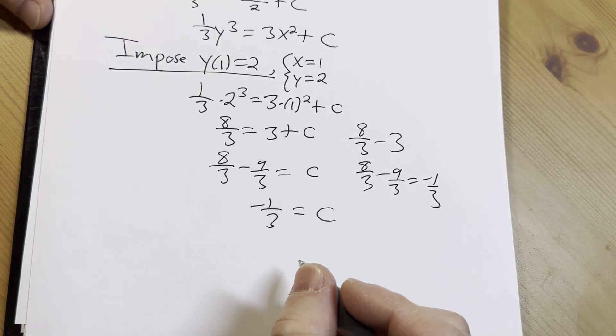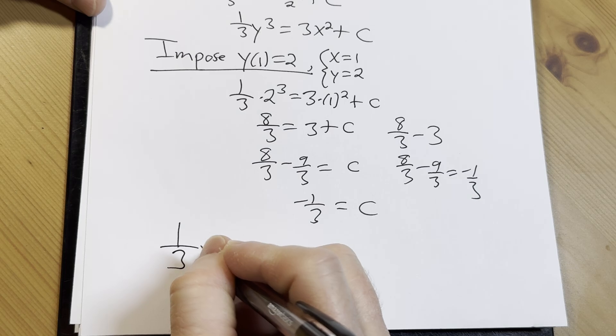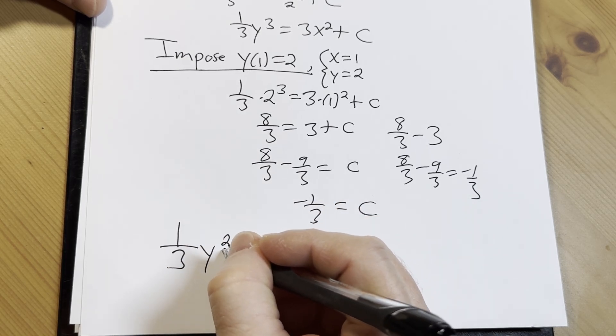So then you take your C and you go back to your original solution. So we have 1 third y cubed—cubed rather, not squared—equals 3x squared plus,